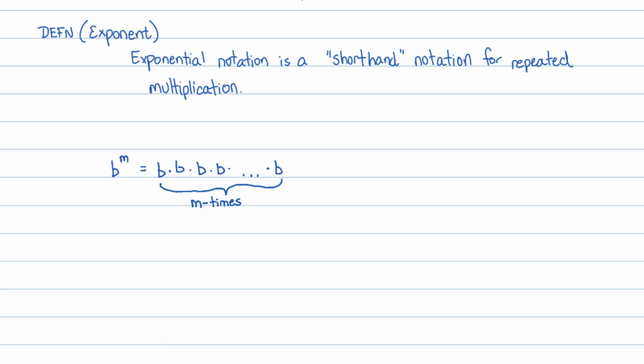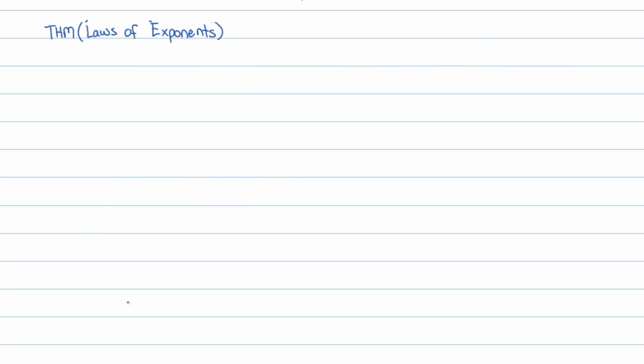Just to indicate a couple little things here. The b is called the base of the exponent. The m is called the exponent itself, or some people call it the power. It doesn't really matter to me what it's called.